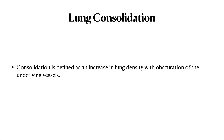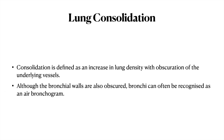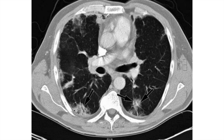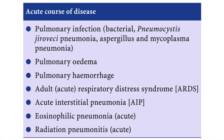The next important lung attenuation pattern is lung consolidation. It is defined as an increase in lung density with obscuring of underlying vessels. Although bronchial walls are also obscured, the bronchi can often be recognized as an air bronchogram. Here you can see patchy consolidation where there is no visibility of vessels underneath, compared to areas of ground glassing where vessels are still visible. The bronchial lumen remains visible even though the wall is obscured, giving the appearance called an air bronchogram.